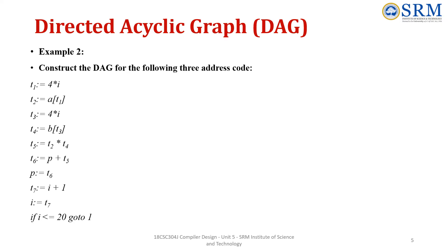Now we will see one more — an elaborated example. Here we have been given directly with the 3-address code, which consists of 10 statements. We will construct the DAG for this, moving from one statement to another in serial fashion.